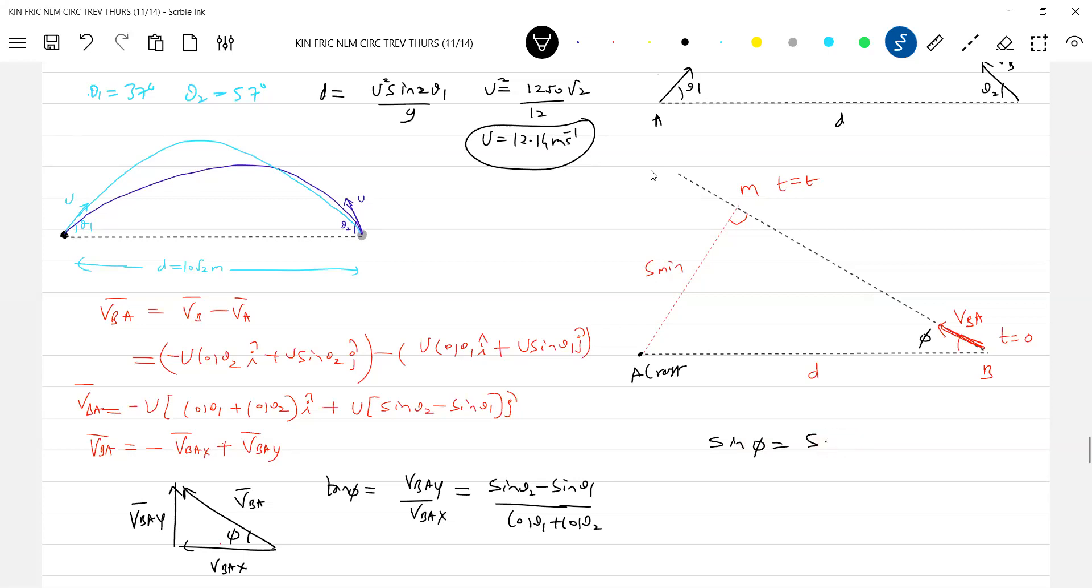So now next I'll go for sin phi is equal to S minimum by D. What's tan phi value? 1 by 7.